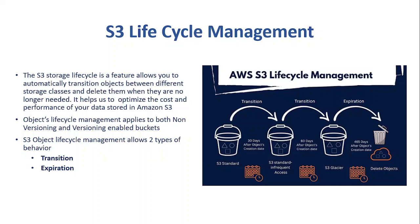There are two types of behaviors allowed in lifecycle management: transition and expiration. Transition is where the storage class of an object changes — for example, from Standard to Glacier or Standard to Standard Infrequent Access. Expiration is where the object is permanently deleted.